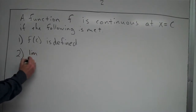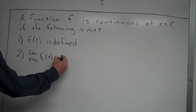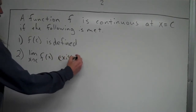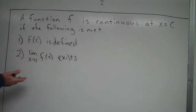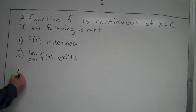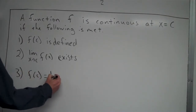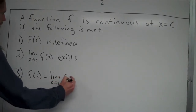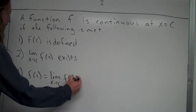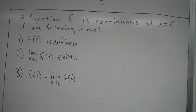Another thing that has to happen: the limit as x approaches c of f of x must exist. That limit must exist. And lastly, f of c has to be equal to the limit as x approaches c of f of x. Those are the three conditions that must be met.